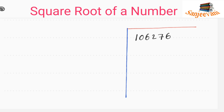In this video I am explaining how to find a square root of a number. On screen you can see the number 106276. We will pair these numbers from the units place — these two numbers will be the first pair, these two will be the second pair, and these two will be the third pair.